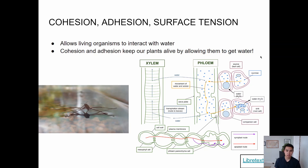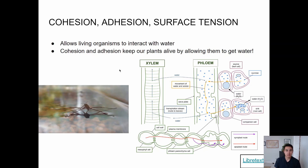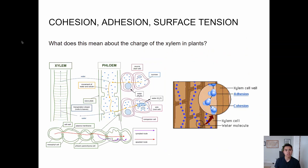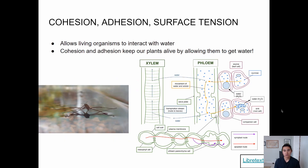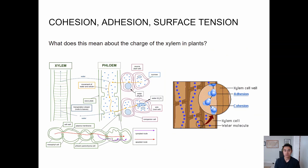Cohesion and adhesion also keep your plants alive. How plants get water is through the xylem — think of water traveling from the roots through the xylem into the leaves. When water is moving up the xylem, cohesion is water-to-water, and adhesion is water-to-xylem. This begs an interesting question: what does this mean about the charge of the xylem? I want you to think about that and explain your reasoning.